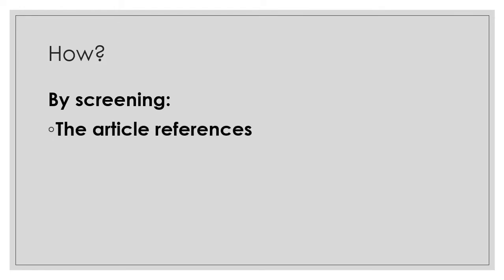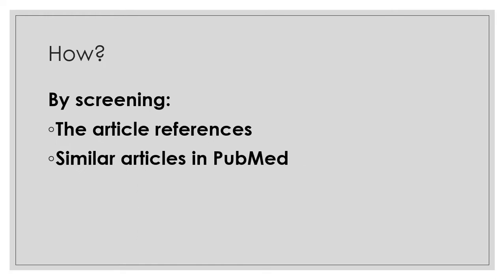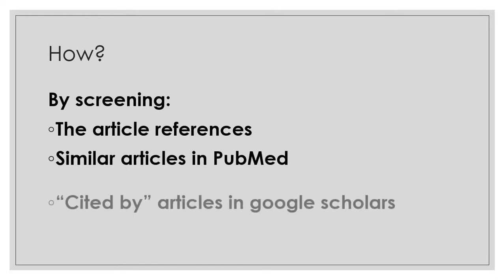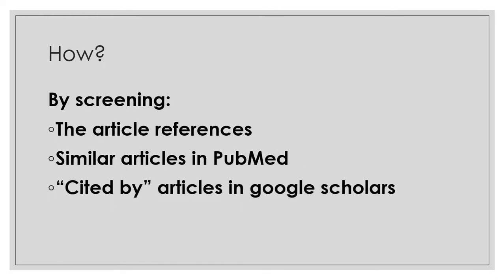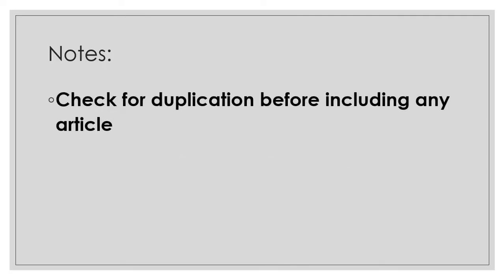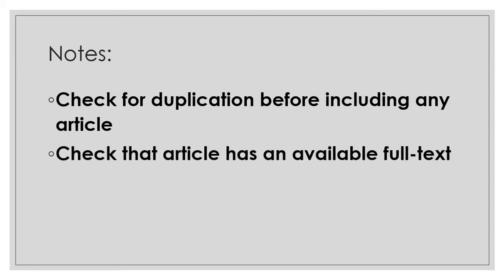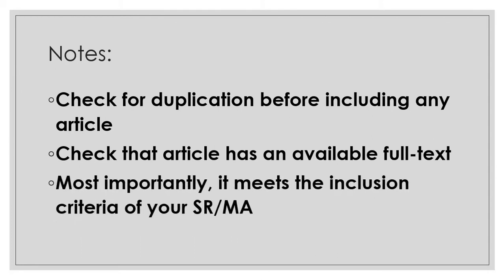How can we do it? We can perform it through three main ways. Firstly, by searching the references of the article. Then by searching the similar articles on PubMed. And finally, the cited-by section in Google Scholar. It's important to check for duplication before including an article, check that the article has available full text, and most importantly, check that the study meets the inclusion criteria of your systematic review.